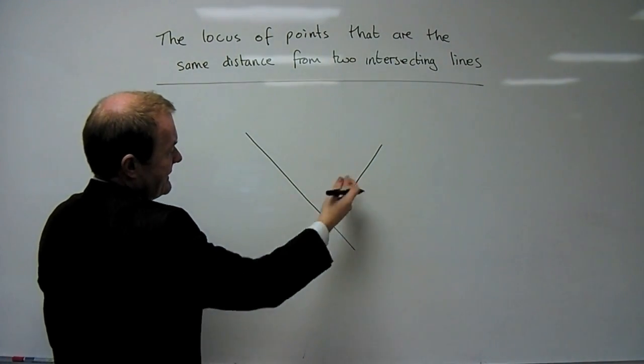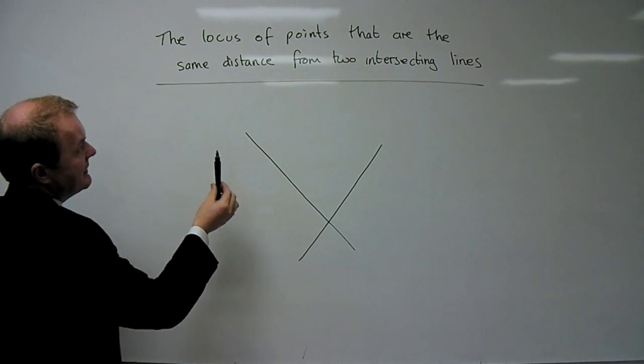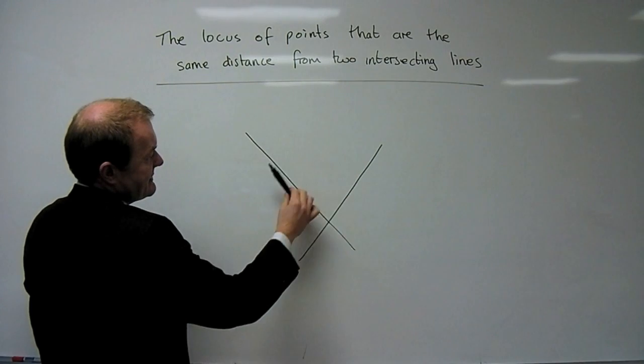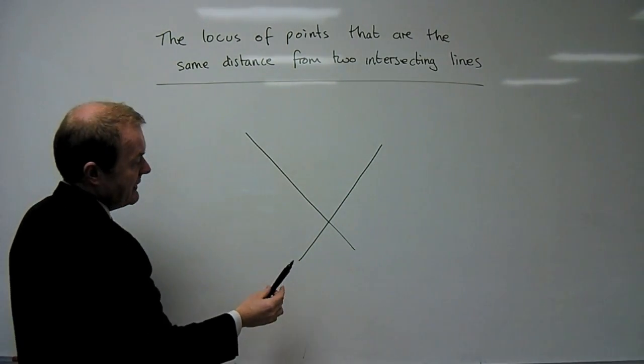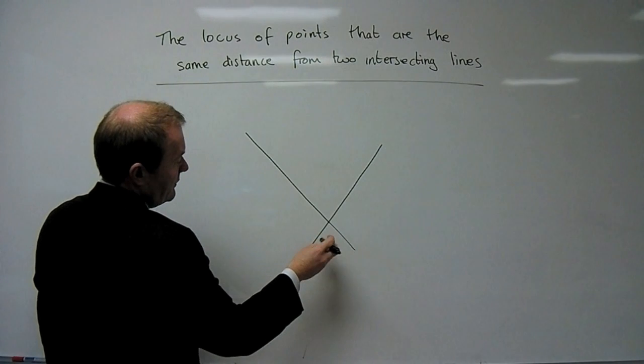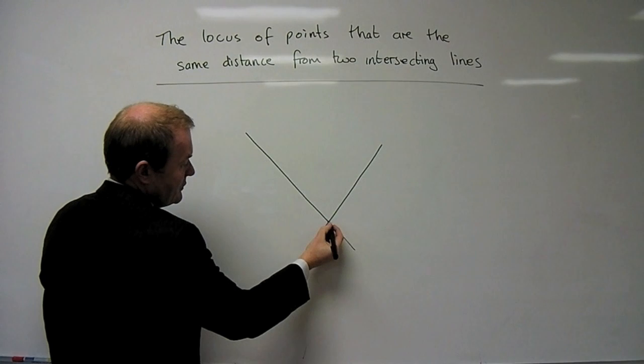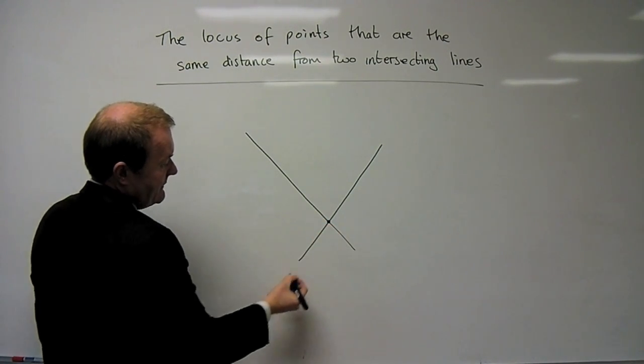We've basically got two intersecting lines and I want to find the spots, the places that are exactly the same distance away from both of those two lines. So what we find is, well obviously the point at which they both touch is exactly the same distance.